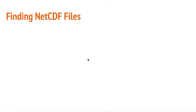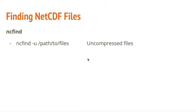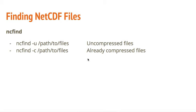When it comes to compressing NetCDF files, the first thing you might need to do is locate where your NetCDF files are. Many NetCDF files are generated using the naming convention of .nc as a suffix, although some models don't do that — for example, the WARF model doesn't. One way of doing this is to use the ncfind utility, which identifies all NetCDF files in a given directory. If you already have some compressed NetCDF files and want to find only the uncompressed ones, use the -u flag. If you want to find the compressed ones, use the -c flag. To go into sub-directories recursively, use the -r flag.